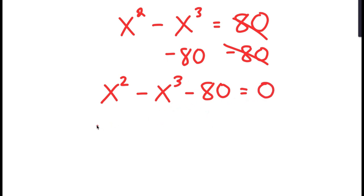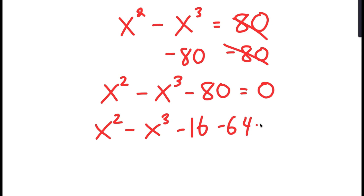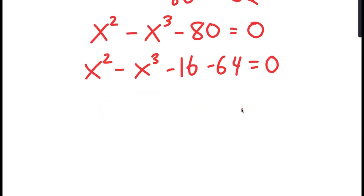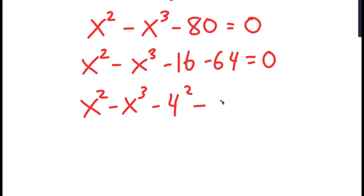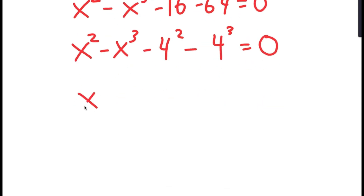From here, I'm going to replace negative 80 with negative 16 minus 64. I'm going to rewrite negative 16 as negative 4 squared and negative 64 as negative 4 to the power of 3. Then I'm going to group x squared with negative 4 squared, and x cubed with negative 4 cubed.